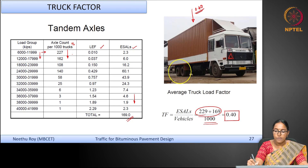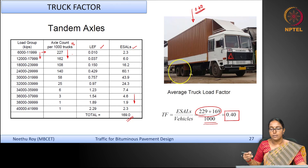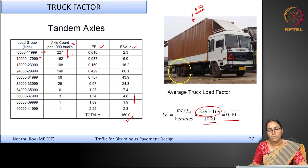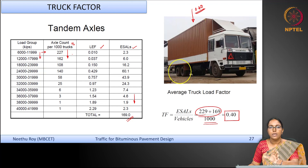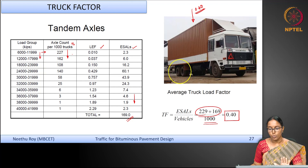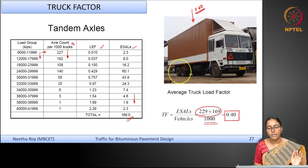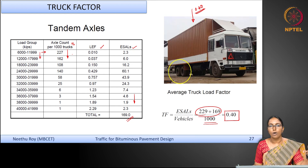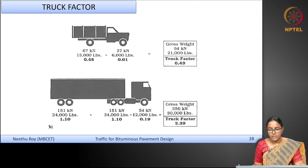Now if your traffic stream contains 2000 of this truck type, you can simply multiply by 0.40 to convert those 2000 vehicles into equivalent standard axles. This is the idea of the truck factor — each truck class is assigned a truck factor, whereas in the VDF method all vehicles are combined to find one vehicle damage factor.